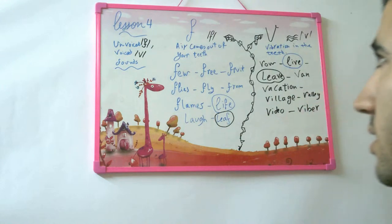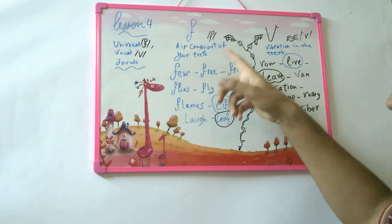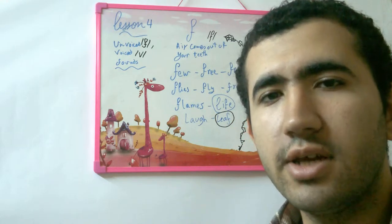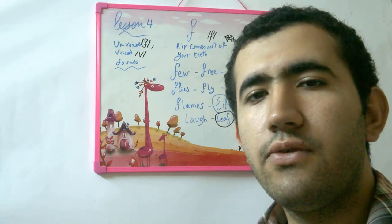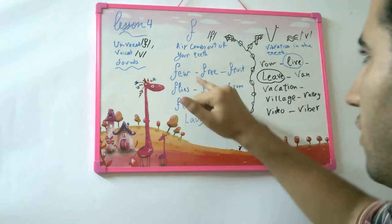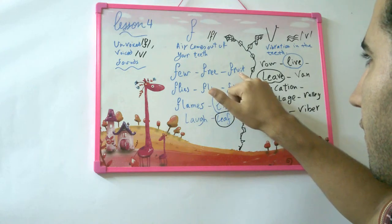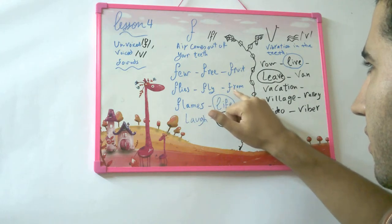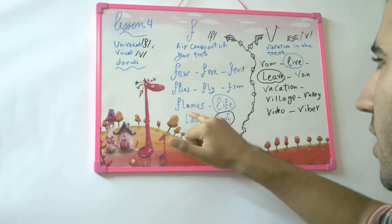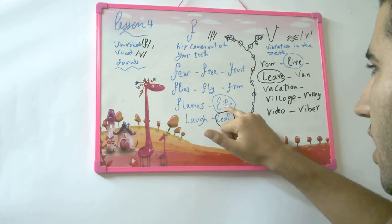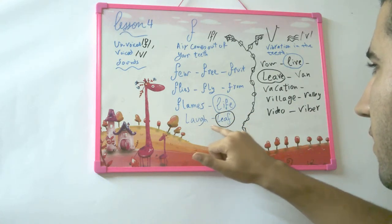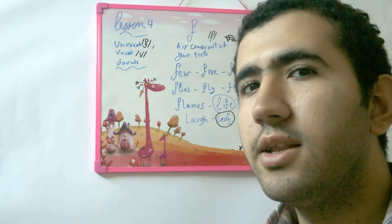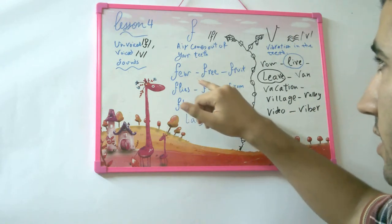So the F sound, air comes out your mouth. Few. So say the sound first before you say the word to feel the sound. Few, free, fruit, flies, fly, from, flames, live, laugh, leave, laugh, leave. Again, few, free, fruit, flies, fly, from, flames, live, laugh, laugh, leave.